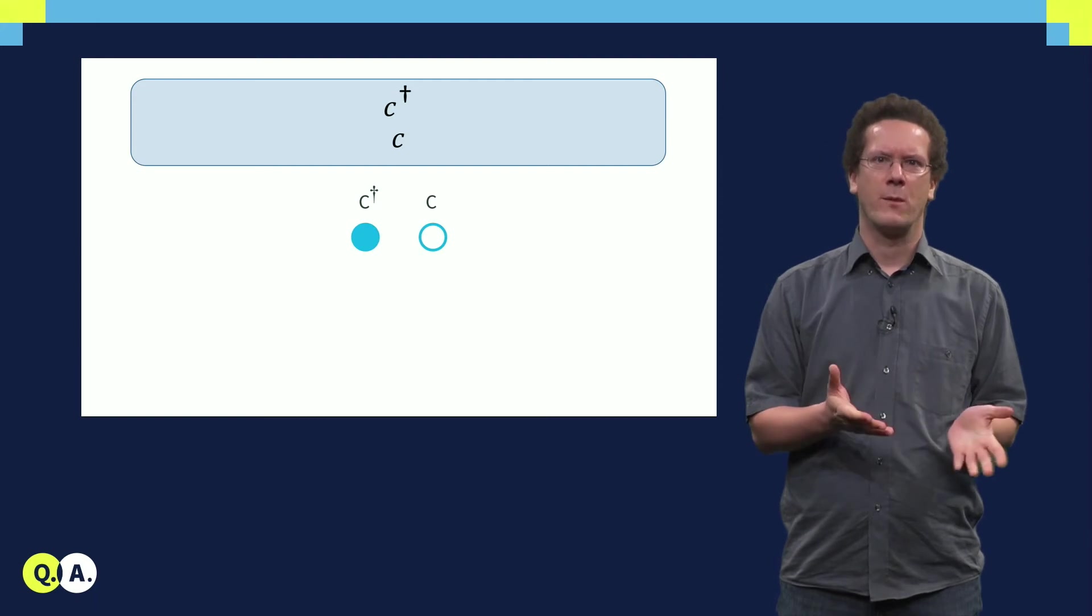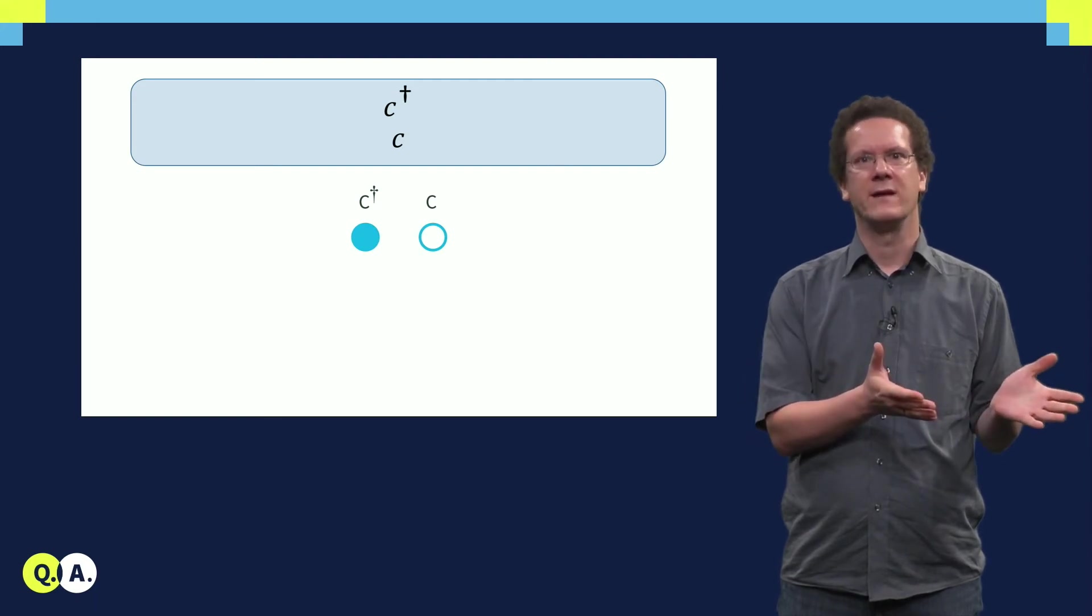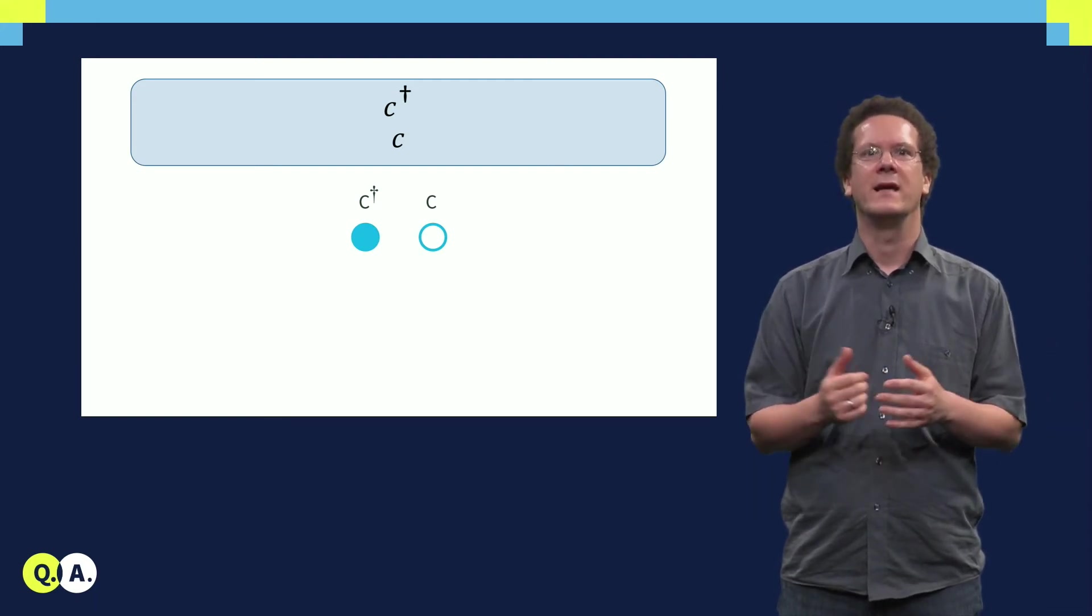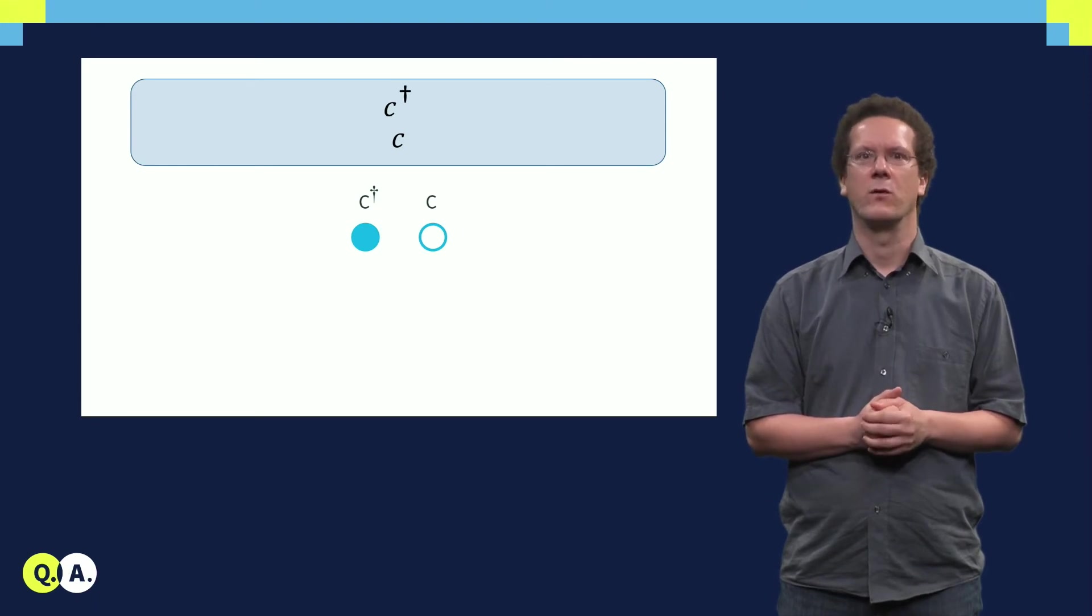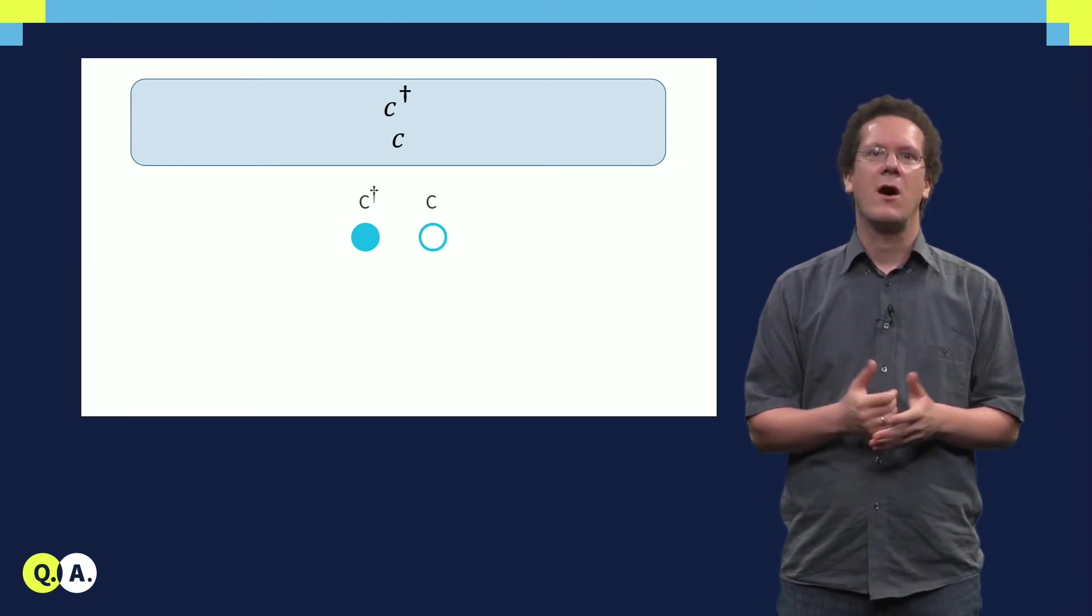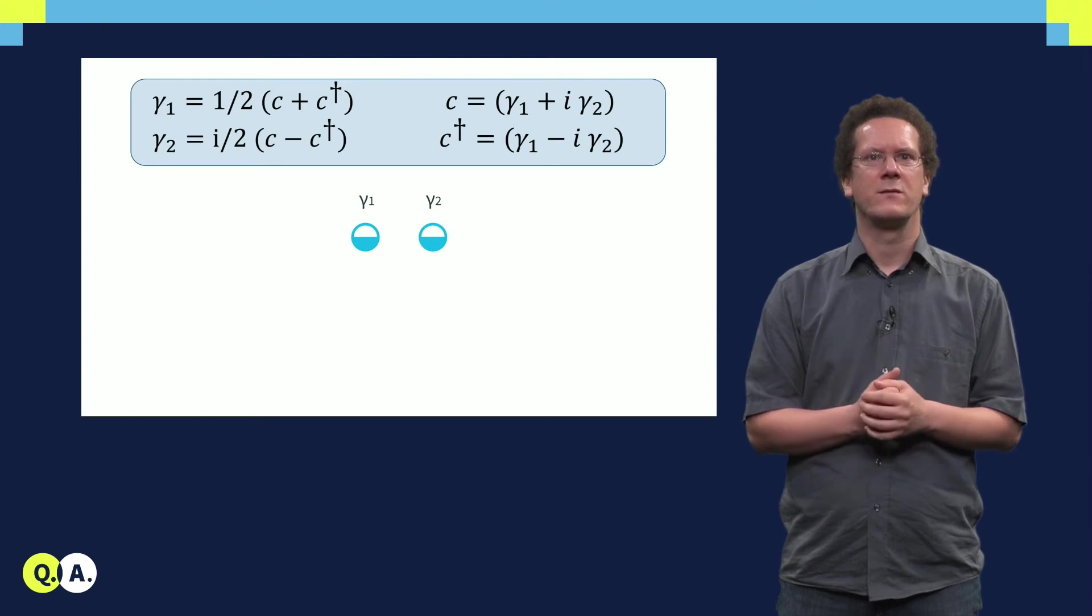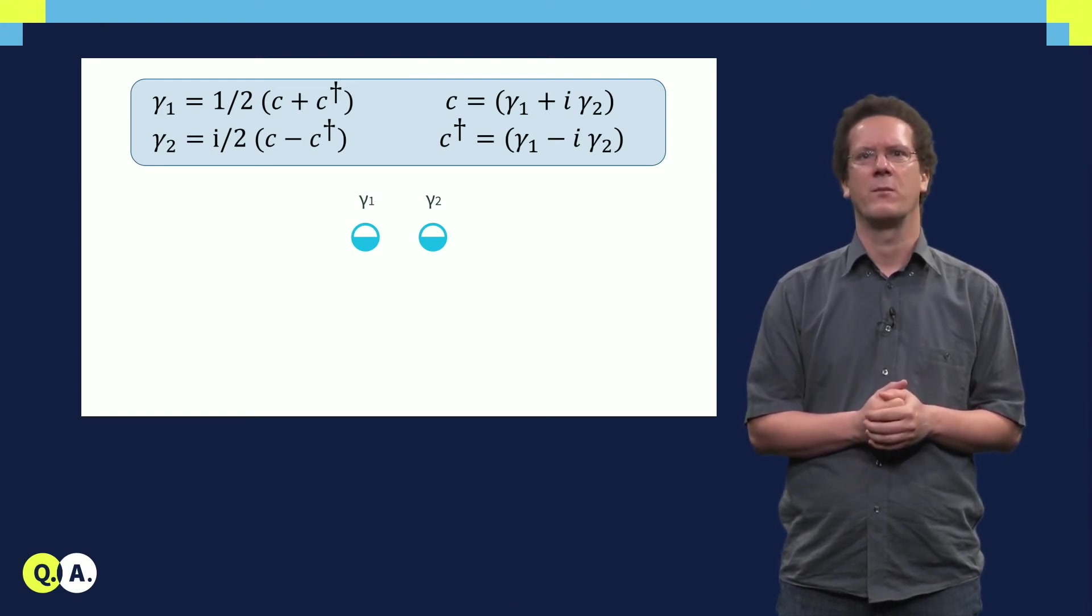They are described by fermionic operators, the creation operator c-dagger for the electron, and the annihilation operator c for the hole. Now, I can do a simple linear superposition of operators, an equal superposition of creation and annihilation operators.